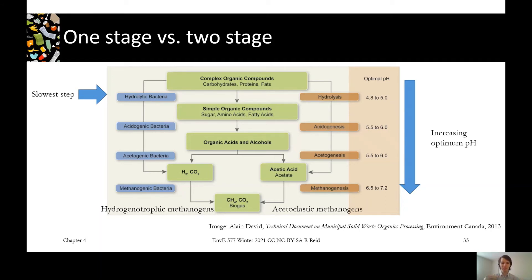And then there are hydrogenotrophic methanogens — hydrogen-eating methanogens that use the hydrogen and CO2 that's there. But they both form the same biogas mixture of methane and CO2 at the end.